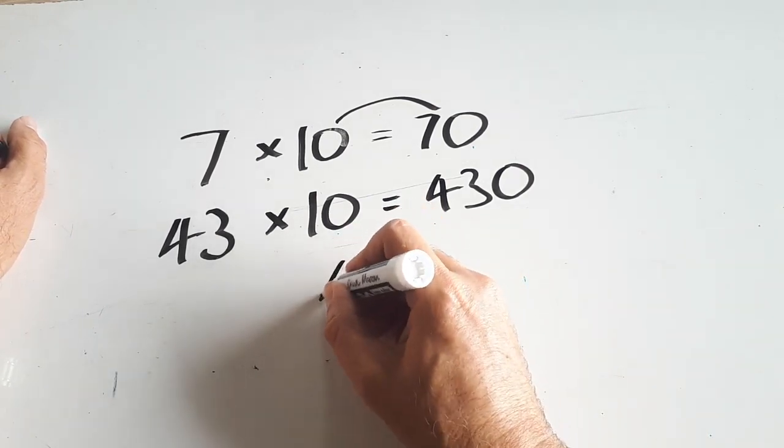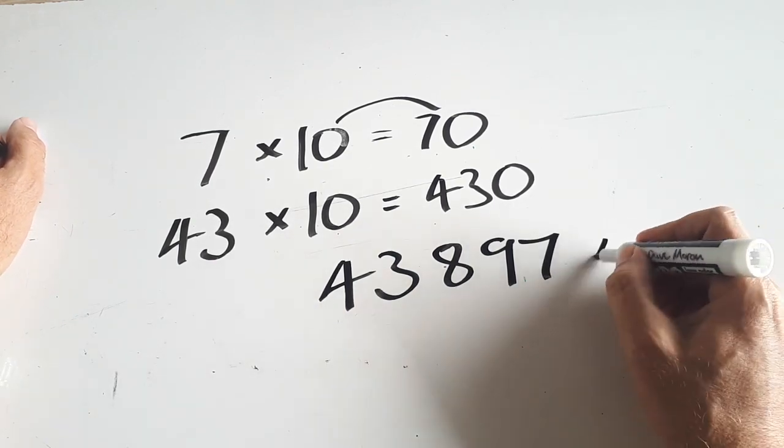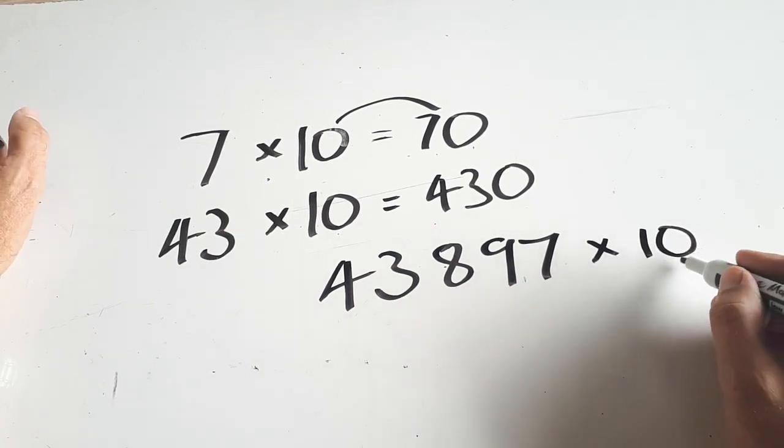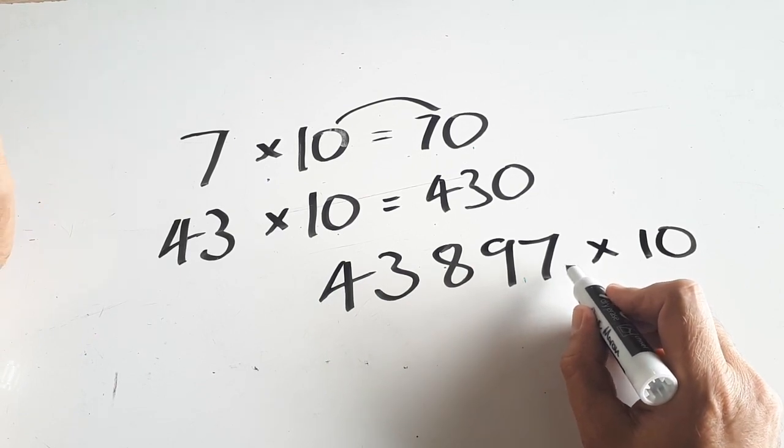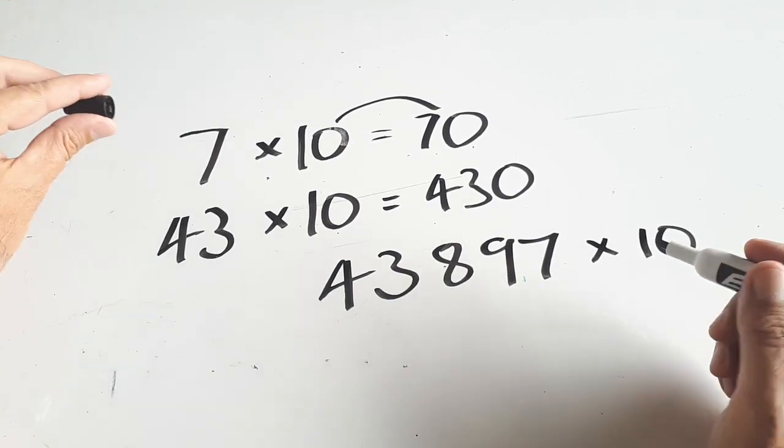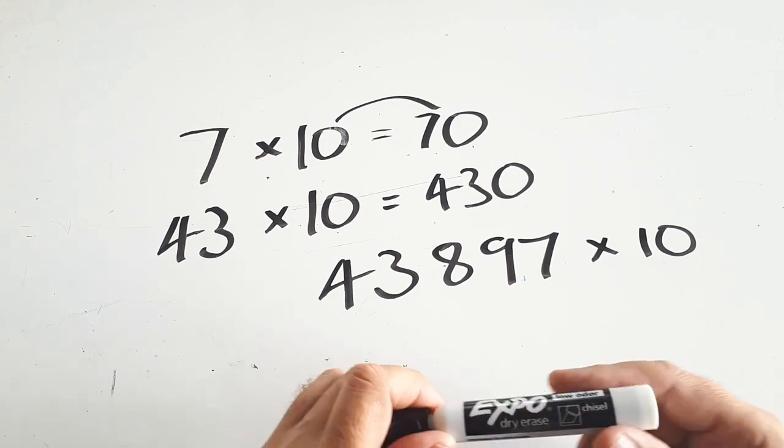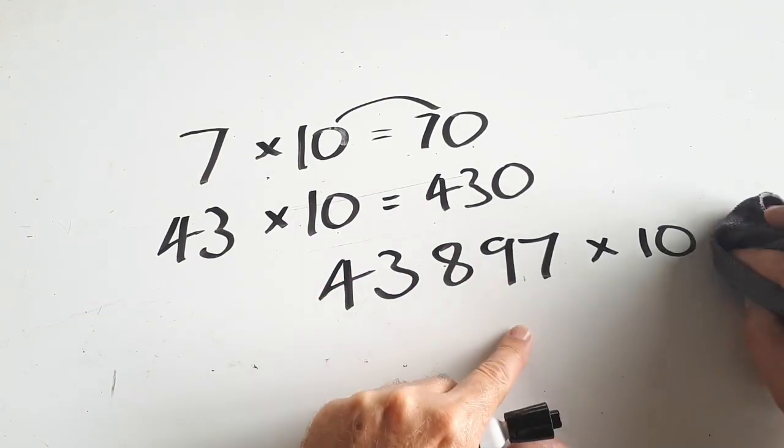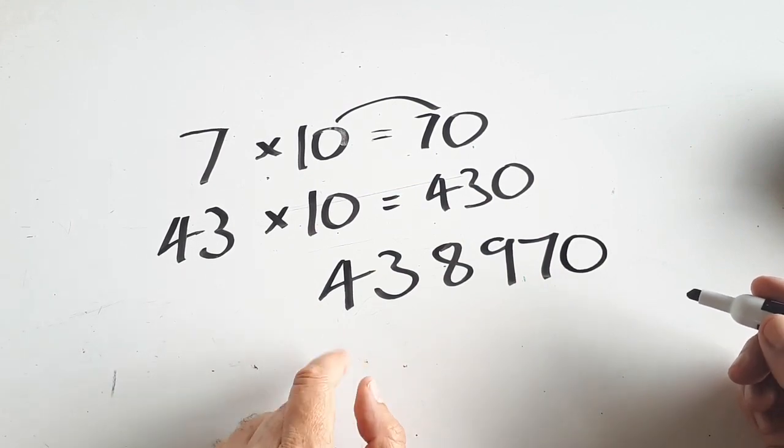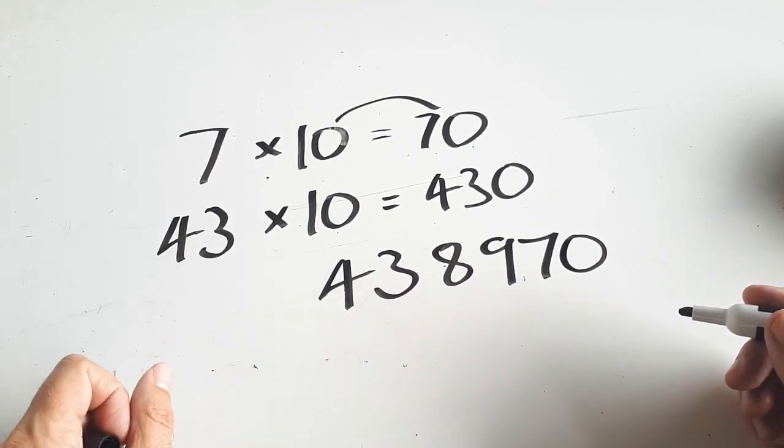Say you had 43,897 times 10. I could take that number, and it feels like what we're doing is just taking the 0 and popping it onto the end there. I've heard people say all you have to do is add a 0. I can see what people are saying, but the problem is what we're really doing is shifting its place value. In practice though, to multiply that number by 10, popping a 0 on the end has the desired effect. So multiplying 43,897 by 10 gives us 438,970. You get the right answer.